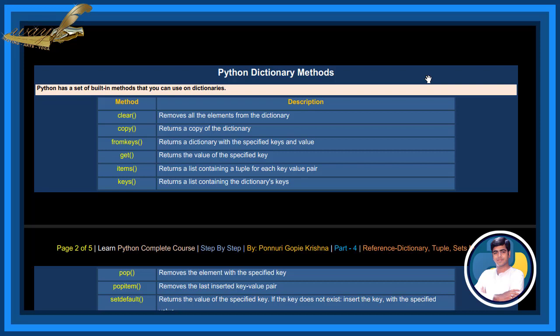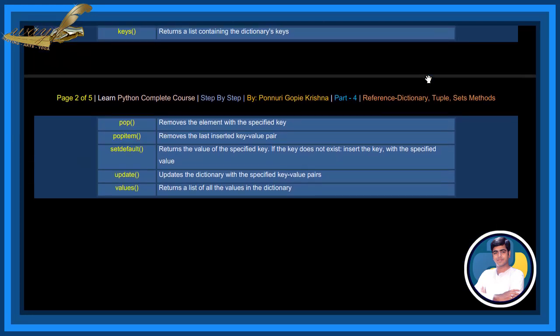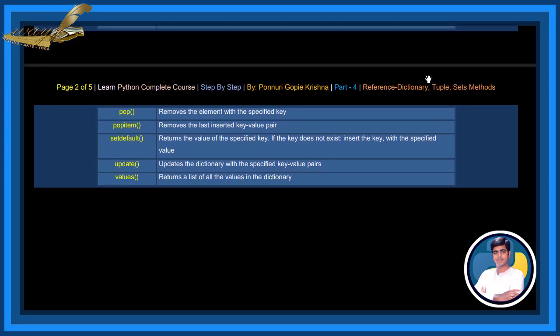Items Method returns a list containing a tuple for each key value pair. Keys Method returns a list containing the dictionary's keys. Pop Method removes the element with the specified key. PopItem Method removes the last inserted key value pair.